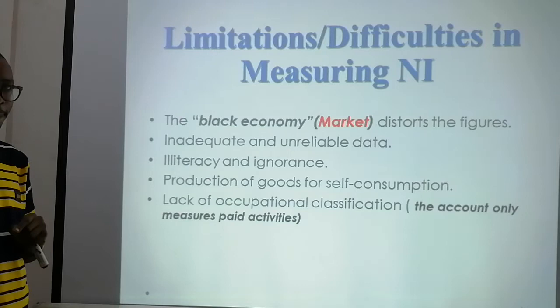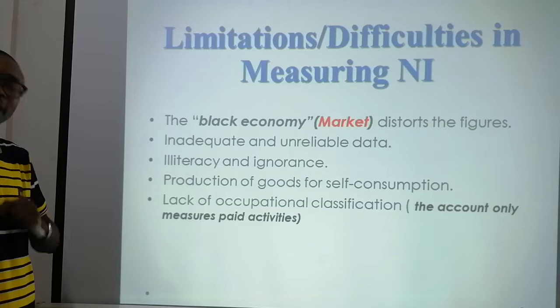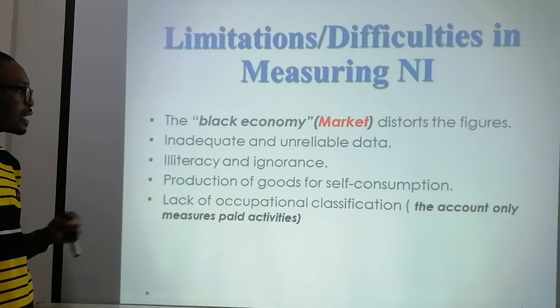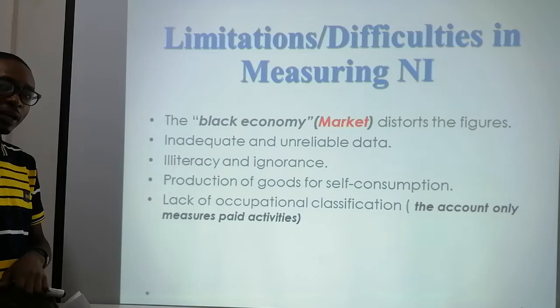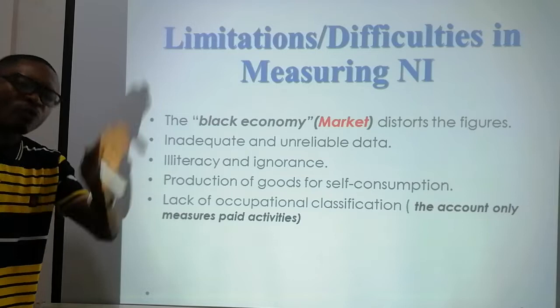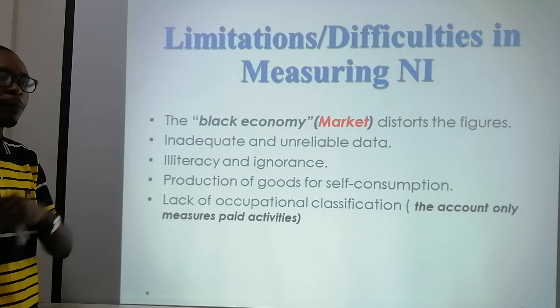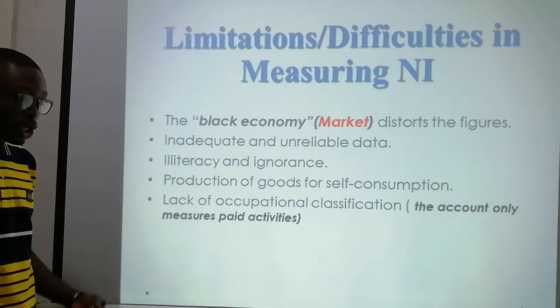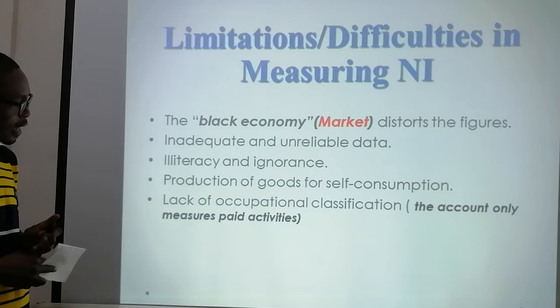Another difficulty is inadequate and unreliable data — sometimes the data is flawed due to double counting, so we cannot get accurate data and cannot rely on it as our national income calculated at the end of the year. Also, illiteracy and ignorance makes it difficult to get accurate national income values. Additionally, production of goods for self-consumption makes it difficult, because some people in the village produce goods and services for themselves and don't even know they should pay tax after selling.